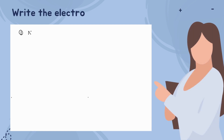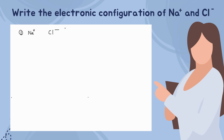Write the electronic configuration of Na⁺ ion and Cl⁻ ion. Na⁺ ion is a cation since it is a positively charged particle. Cl⁻ ion is an anion because it is a negatively charged particle. Before going into the electronic configuration of these two ions, we need to know the electronic configuration of sodium and chlorine atoms.